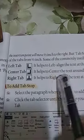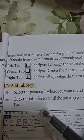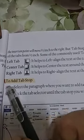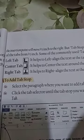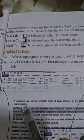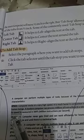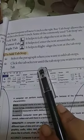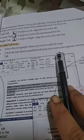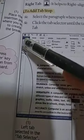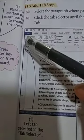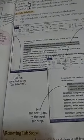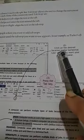Now we will learn how to use these tabs to align our text. To add a tab stop, first we have to select the paragraph we want to align — you can see this paragraph has been selected. The next step is to click the tab selector until the tab stop type you want appears. Here we see the left tab selector key, and we click it.